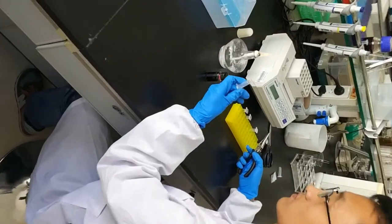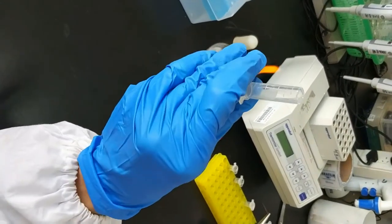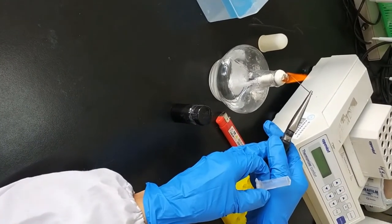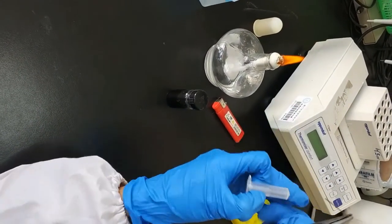First, a conical centrifuge tube. A copper wire is heated and inserted into the bottom of the tube for the copper wire purpose.